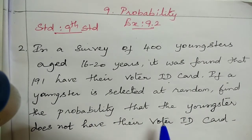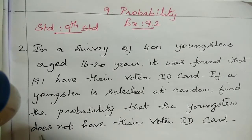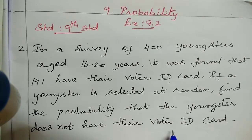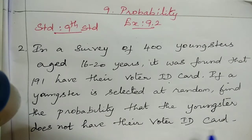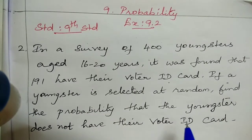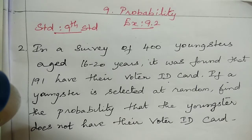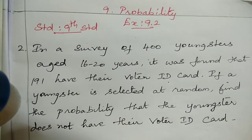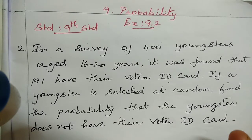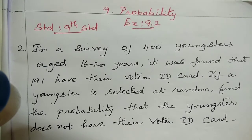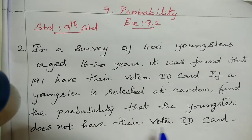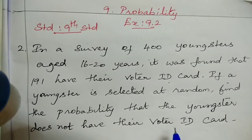find the probability that the youngster does not have their voter ID card. In a survey of 400 youngsters, you can randomly select — find the probability for 'does not have voter ID card'.